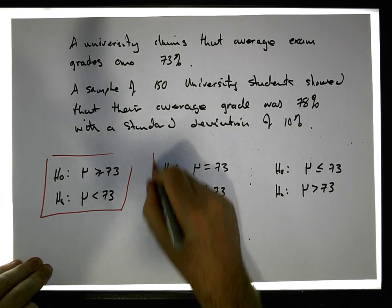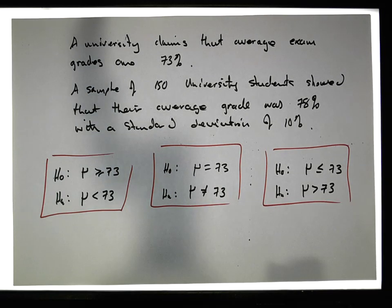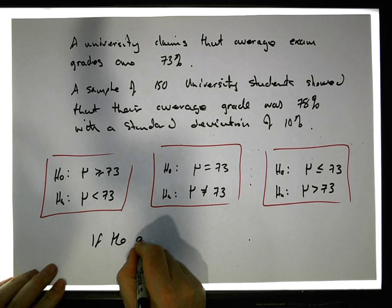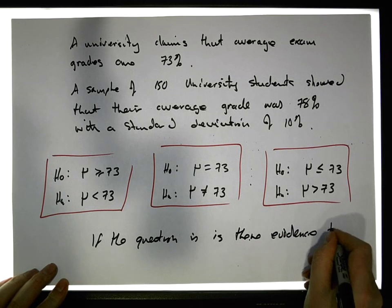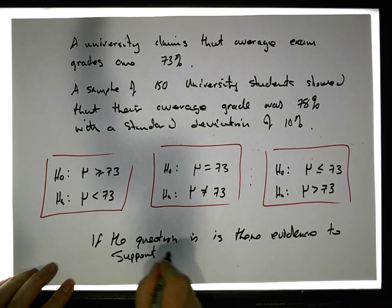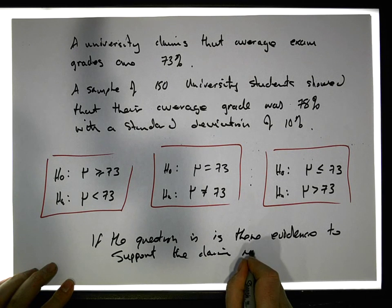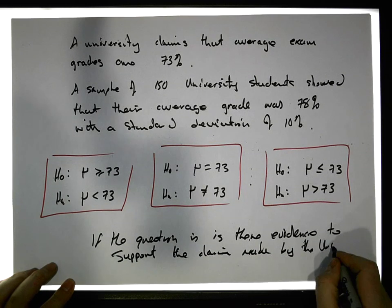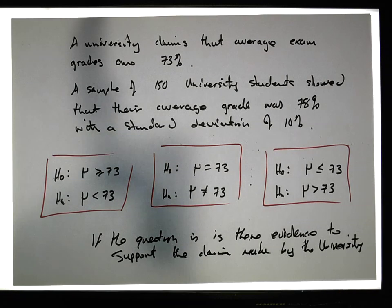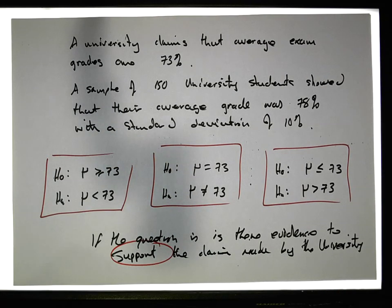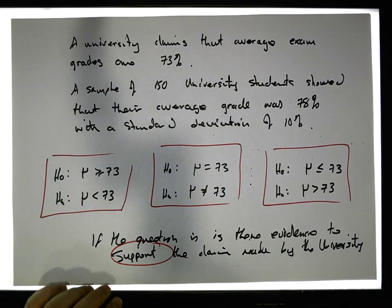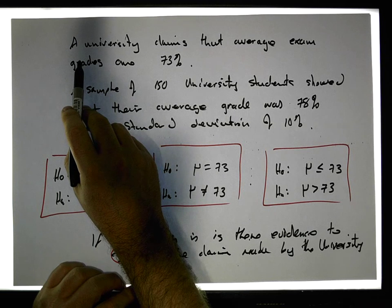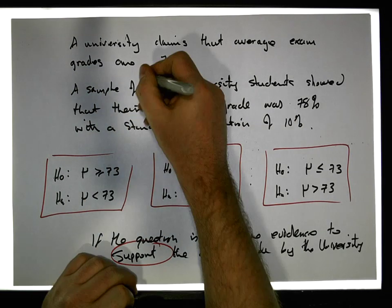There are three ways we could have framed this hypothesis. Now if the question is: is there evidence to support the claim made by the university? The key word is 'support the claim.' Let's say the university claims that the average exam grades are more than a certain value.